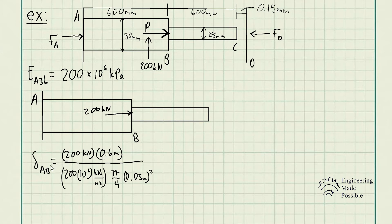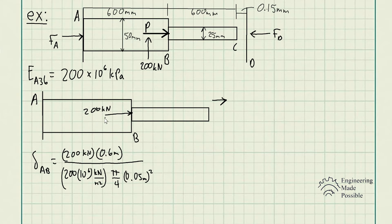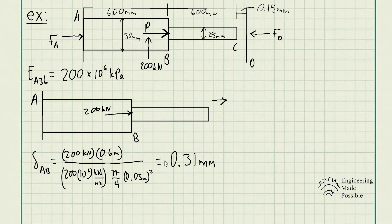Plugging into the deformation equation: the deformation from A to B — since the external load is applied at point B, only the first rod experiences elongation; the second rod just moves with it but is not stretched or compressed. So we apply 200 kilonewtons times the length of the first segment (0.6 meters) divided by the modulus of elasticity times the cross-sectional area (0.05 meters squared times pi over 4). We get a deformation of 0.31 millimeters, converted directly to millimeters.